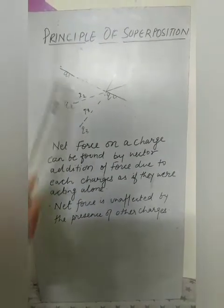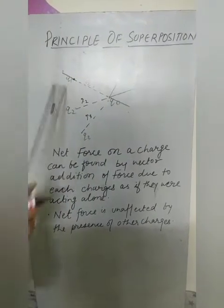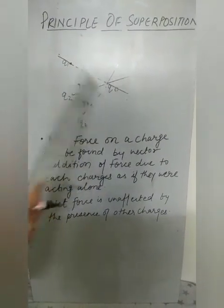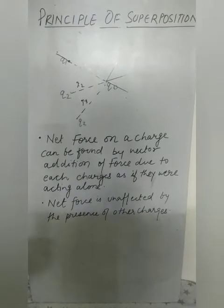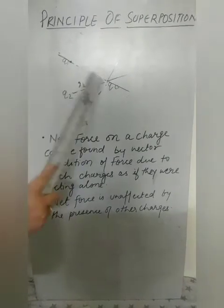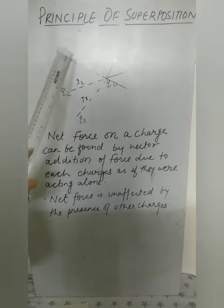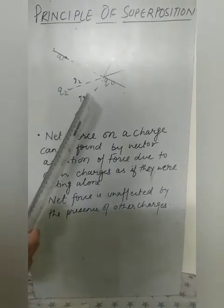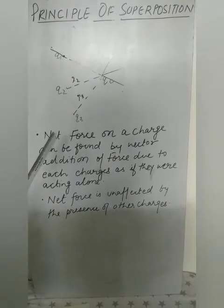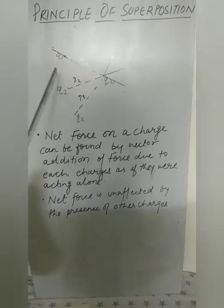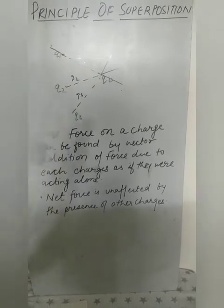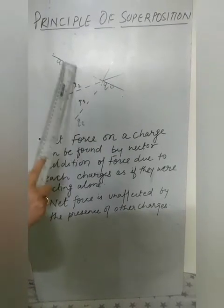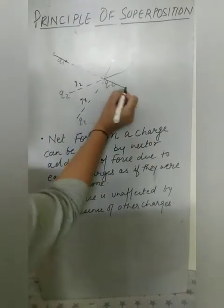Moving to the principle of superposition — here we have a collection of charges q₀, q1, q2, q3. I have taken three charges, though you can take more. q₀ is called the test charge or unit positive charge. To calculate forces using Coulomb's law, remember that Coulomb's law is valid only for a point charge — an electric charge which exists at a single point, having neither area nor volume. So we can apply Coulomb's law directly here.